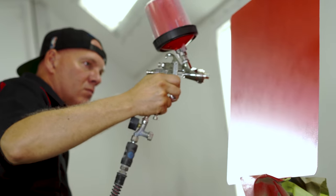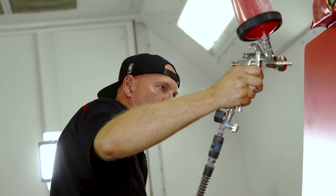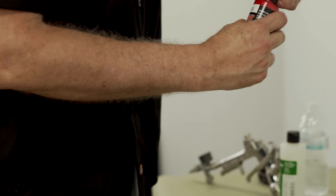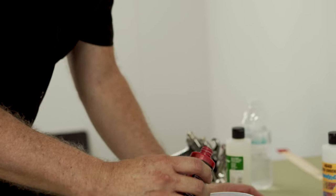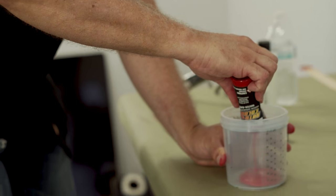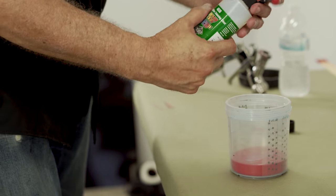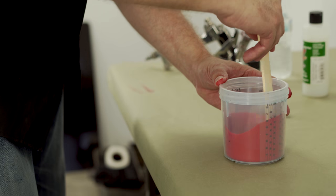Now we're going to spray the radiant red pearl over the red sealer. You can add 10 to 25 percent of the 4030, then add 5 to 10 percent of the 4012 reducer.